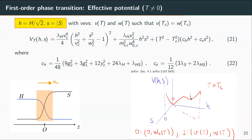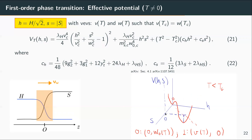There is also a minimum associated with the Standard Model Higgs at a different non-zero value. At the critical temperature the two minima are degenerate. Below the critical temperature we need to guarantee that the singlet scalar has a zero vacuum expectation value, while the Standard Model Higgs acquires the well-known value needed for electroweak phenomenology. This is already very well studied in several papers by Espinosa and collaborators using the formalism of the effective potential.